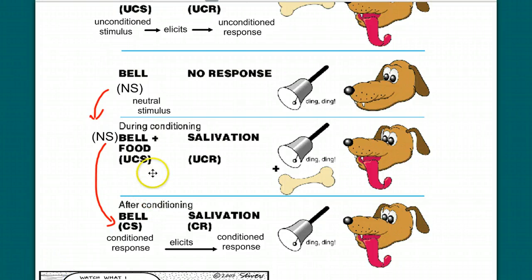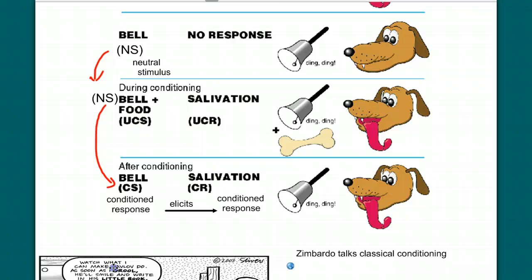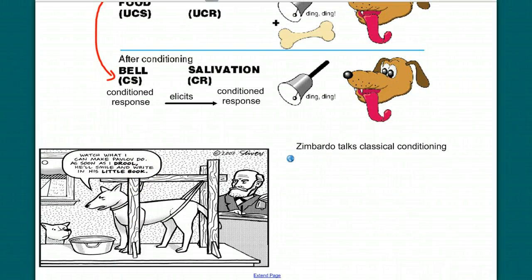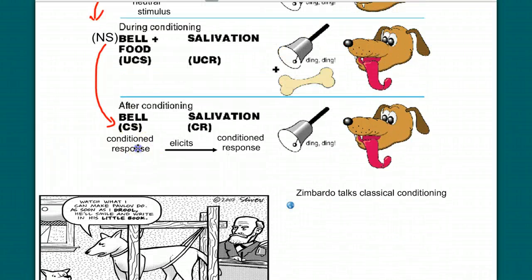If I repeatedly pair the ringing of a bell with the presentation of food. So I ring a bell, I give the dog food. The next day I ring a bell and I give the dog food. Eventually the dog is going to associate the bell and the bell will become an adequate predictor that food is coming. So that after time, if I ring a bell alone, the bell has become what we call a conditioned stimulus.